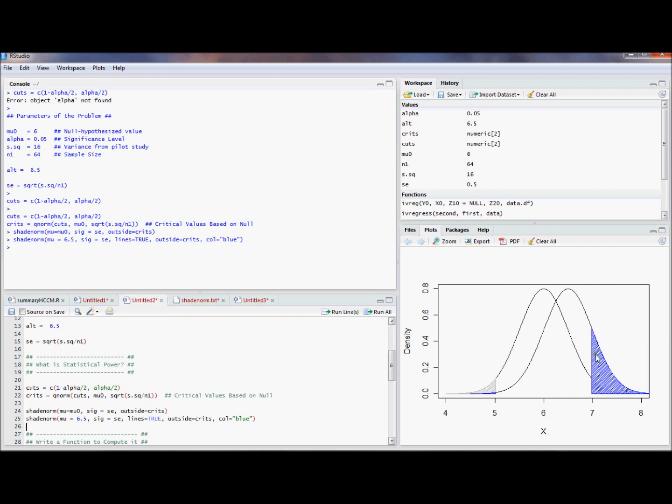Now, the probability that we reject under the alternative hypothesis is called the power. So this blue shaded region is a probability that we'll reject under this alternative hypothesis. That's the power. There was nothing really special about this alternative hypothesis. We could have computed power for any one of these values that were possible for the alternative hypothesis. But we just computed it for 6.5.